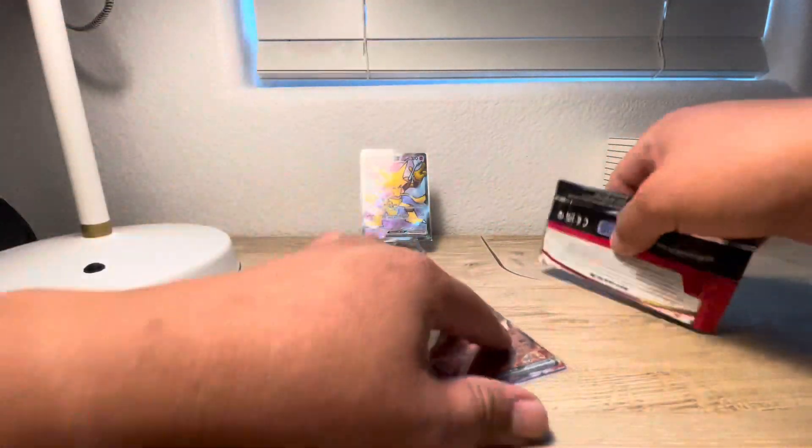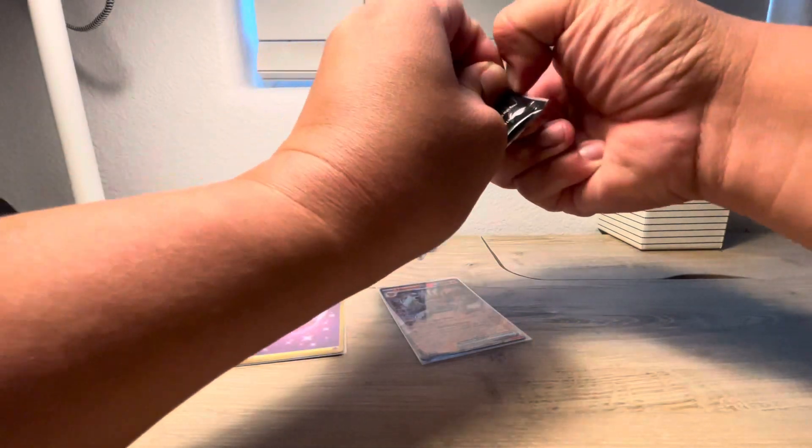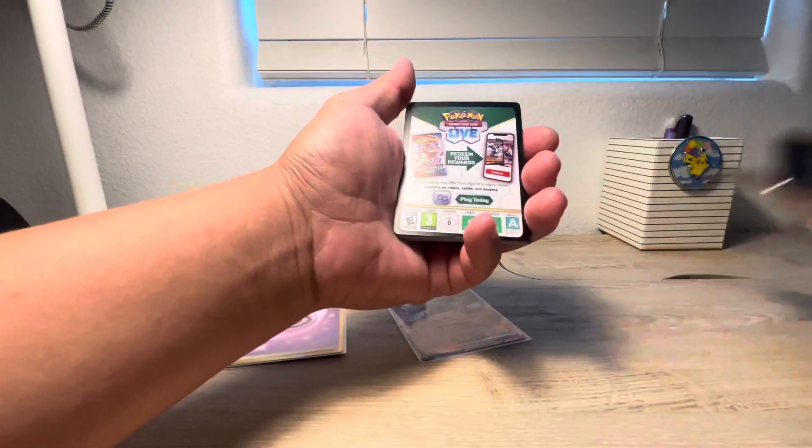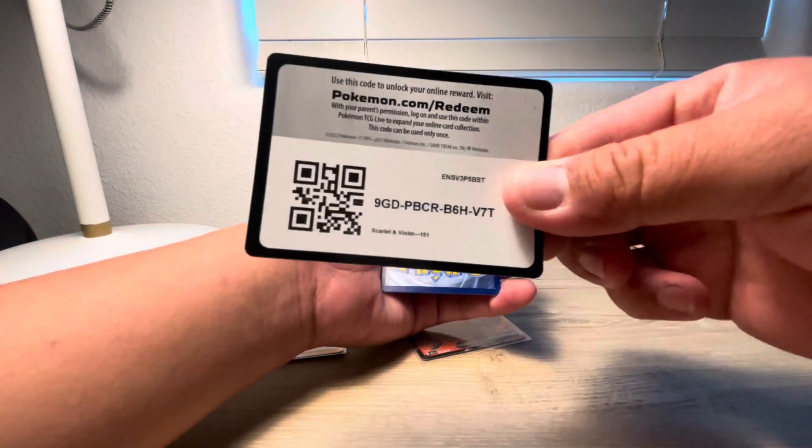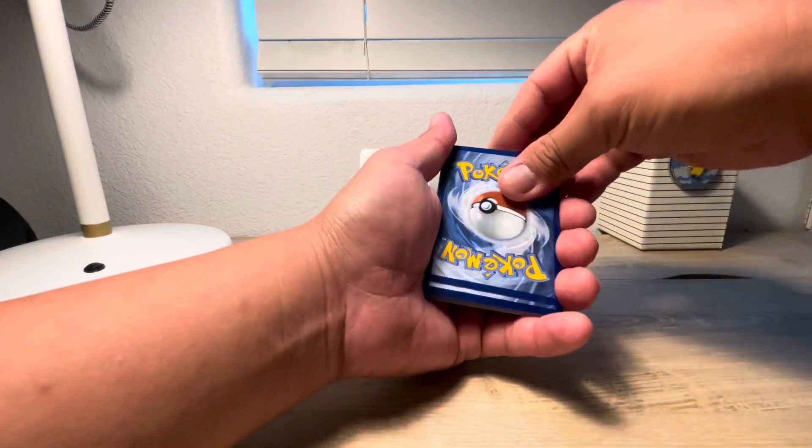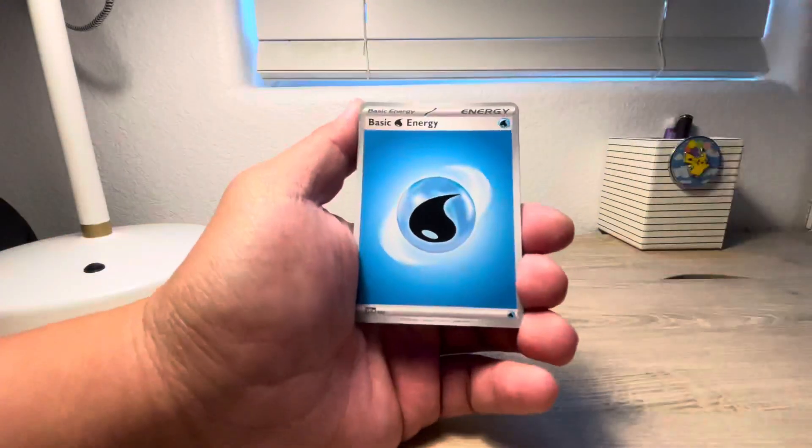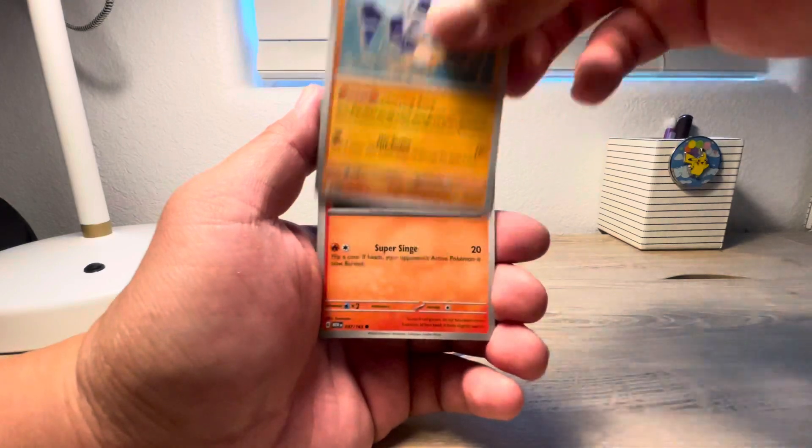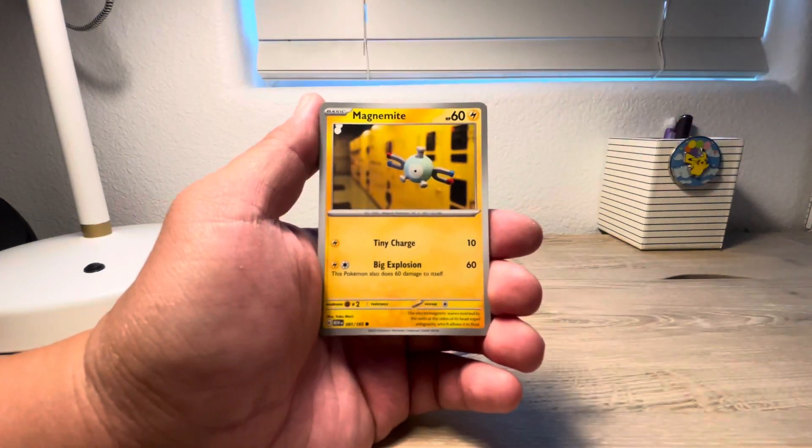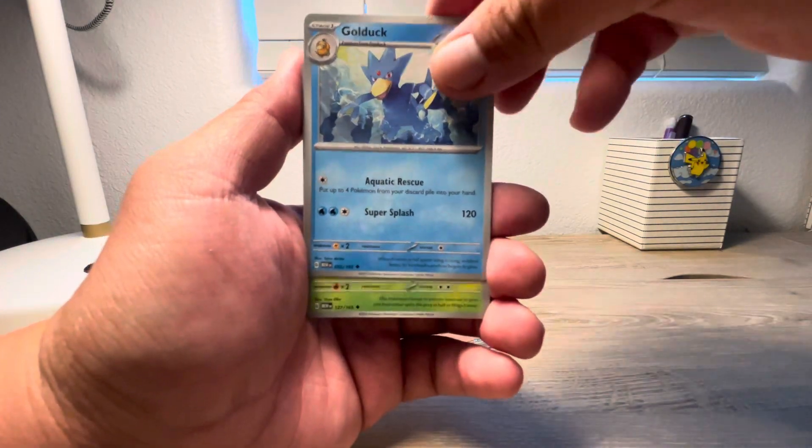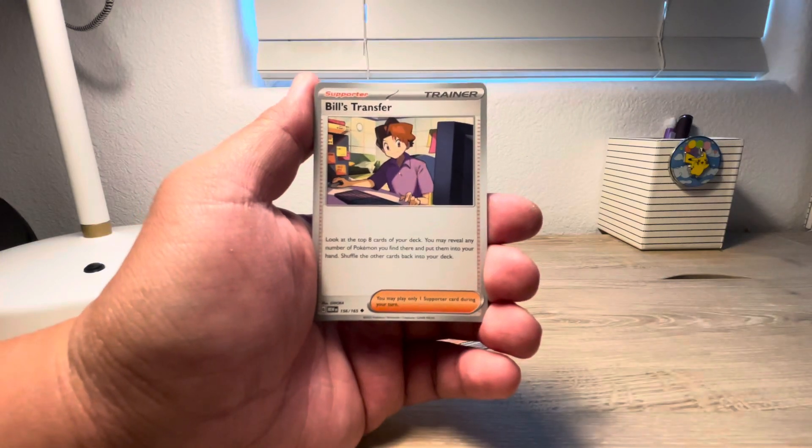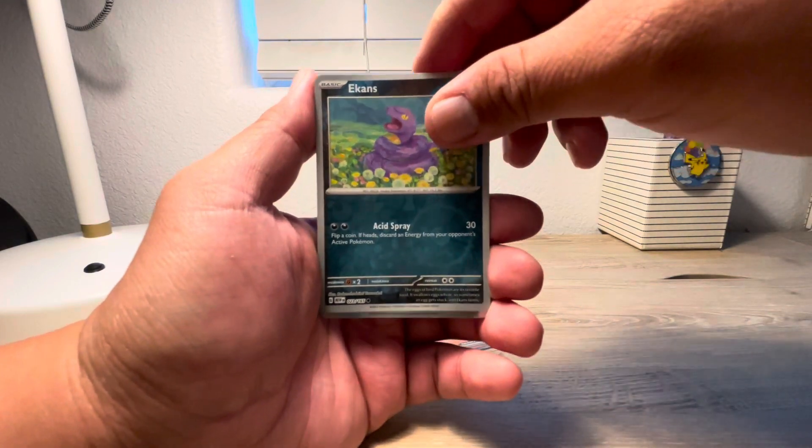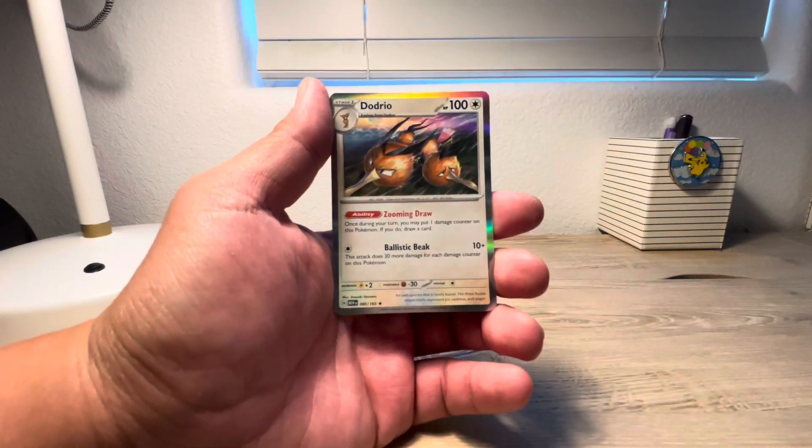Last pack, right? Come on. Give me a Charizard. Blastoise. I don't know. God pack. Something good. There's the last pack here. Here's the code card. One from the back to the front. Come on, baby. Give me something good. Got Water Energy. Ekans. Cubone. Vulpix. Magnemite. Golduck. Pinsir. Bill's Transfer. Hitmonchan Reverse. I think I see something. Ekans Reverse. And a Doduo. Dodrio Holo. Dang it. That's it.